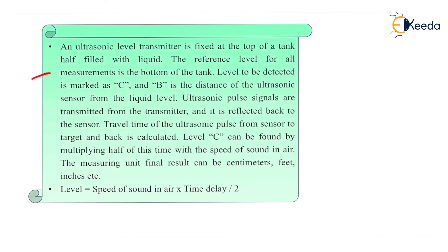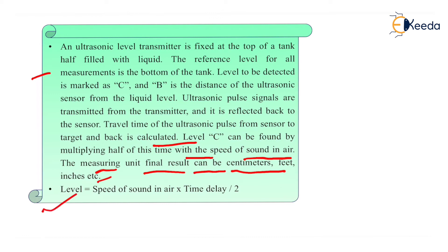Ultrasonic pulse signals are transmitted from the transmitter and reflected back to the sensor. The travel time of the ultrasonic pulse from sensor to target and back is calculated. The level C can be found by multiplying half of this time by the speed of sound in air. The level can be calculated as: Level = (speed of sound in air × time delay) / 2. The measuring unit can be centimeters, feet, or inches.